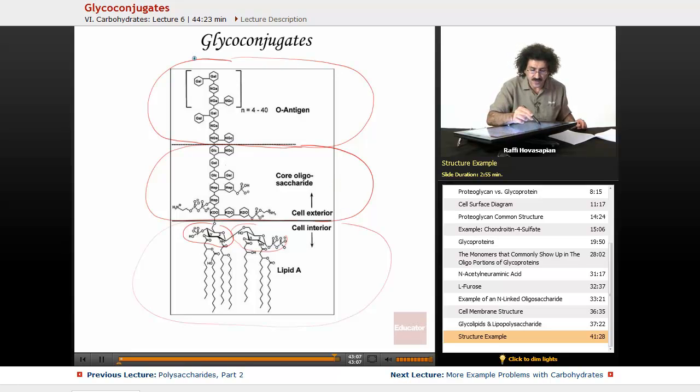And depending on what this is, what collection of monomers and what glycosidic bonds are actually connecting them, that's going to be the point of recognition. We call this the O antigen.